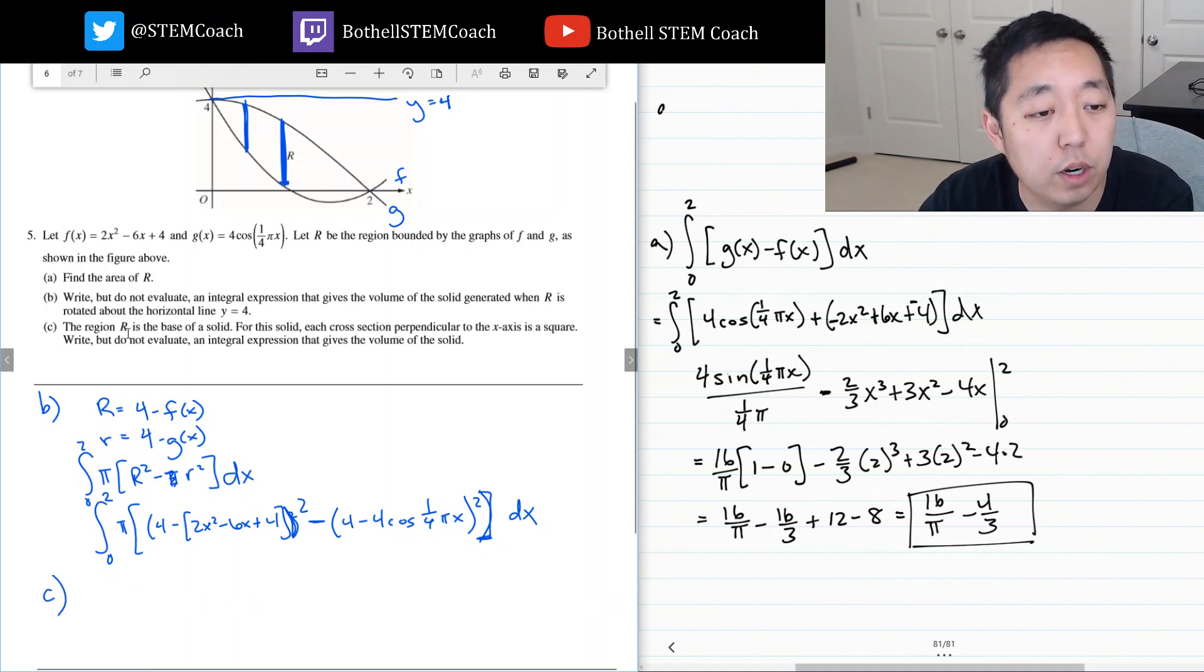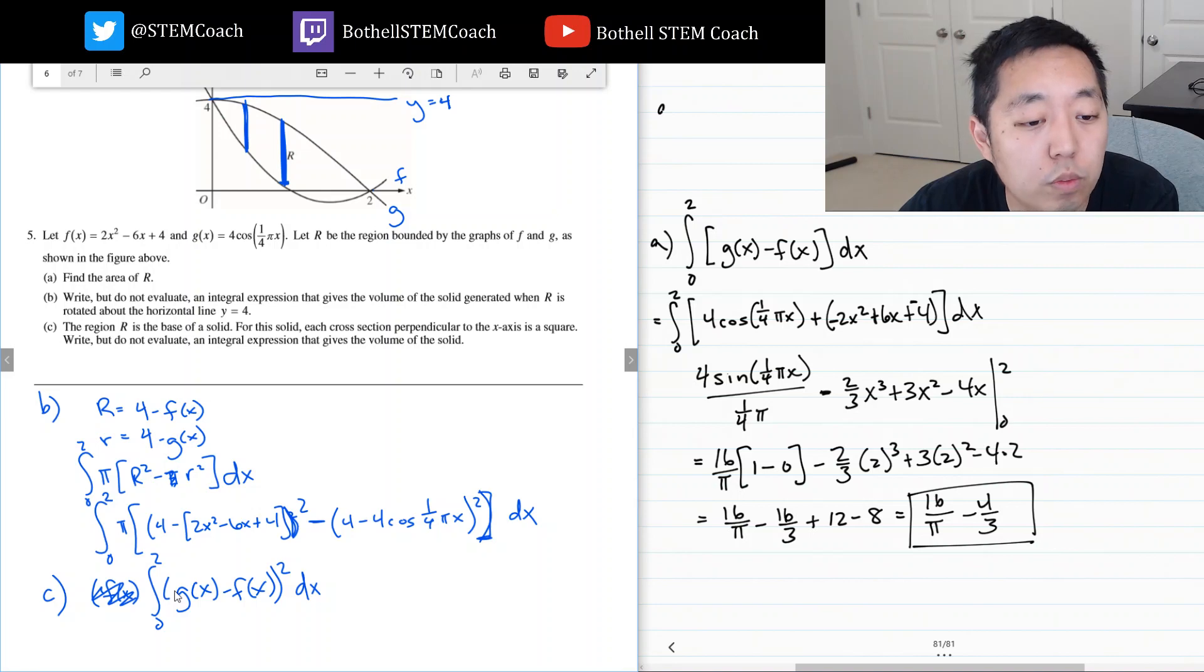c is the region R is the base of a solid. For this solid, each cross section perpendicular to the x-axis is a square. So now, instead of the area being the disk, the area is going to be the square. And the area of the square is going to be g(x) minus f(x). That's the length of one side of the square, like this height of this rectangle right here. And then squared would be the area of the square dx. And I'm going to integrate this from 0 to 2. And just plug in g and f, right? That would be enough. That would give you the volume.